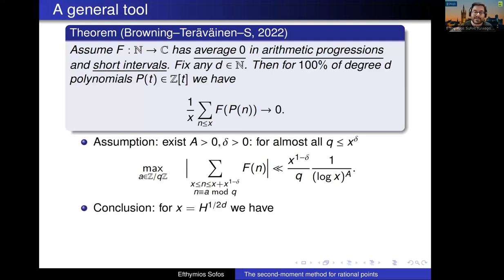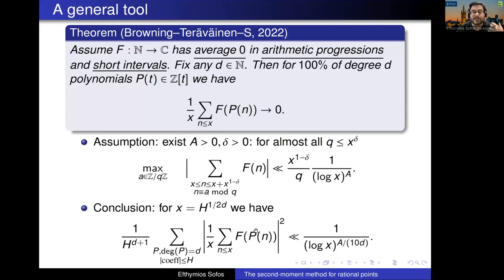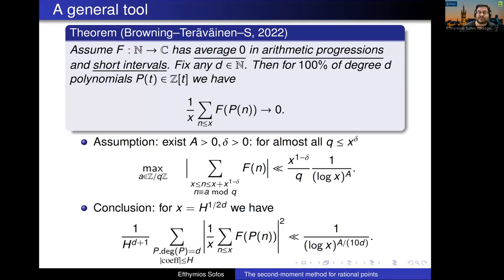The actual conclusion: if you take x — the length of the sum — to be a small power of h, namely 1/(2 times the degree), then the second moment of these sums will have zero average, and you'll get a logarithmic saving.